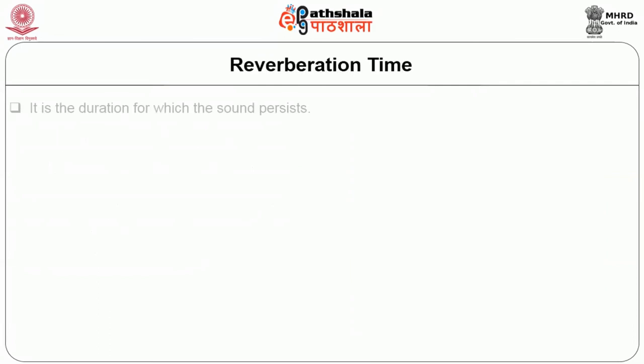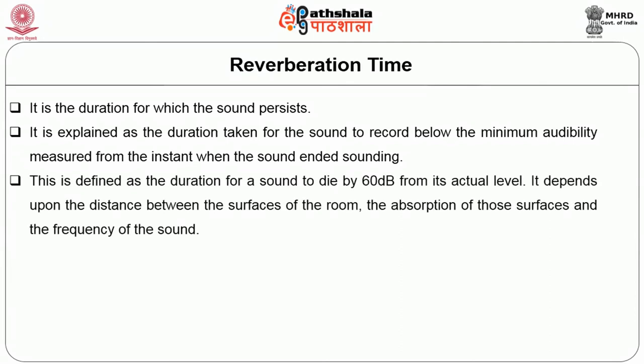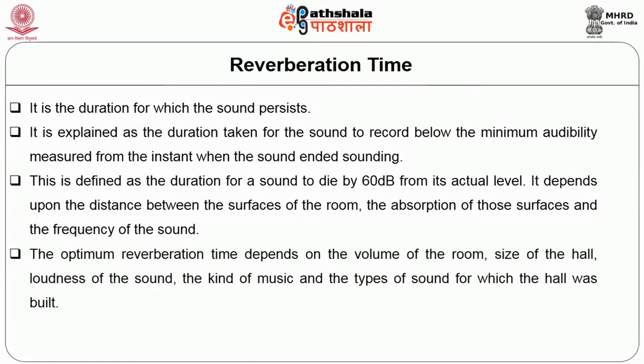What is reverberation time? It is the duration for which the sound persists — the duration taken for the sound to fall below the minimum audibility, measured from the instant when the sound ceased. This is defined as the duration for a sound to die by 60 dB from its actual level. It depends upon the distance between the surfaces of the room, the absorption of those surfaces, and the frequency of the sound. The optimum reverberation time depends on the volume of the room, size of the hall, loudness of the sound, the kind of music, and the types of sound for which the hall was built.